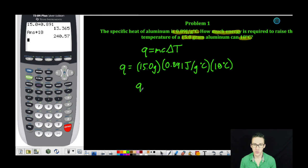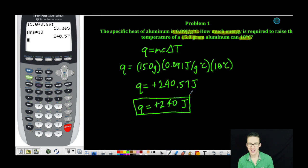Which lets us know that we're going to have to add 240.57 joules. Or if we use correct significant figures here, we're going to have 240 joules of heat energy that we're going to have to add in order to increase the temperature of that aluminum can 18 degrees Celsius. Boom and we're done.